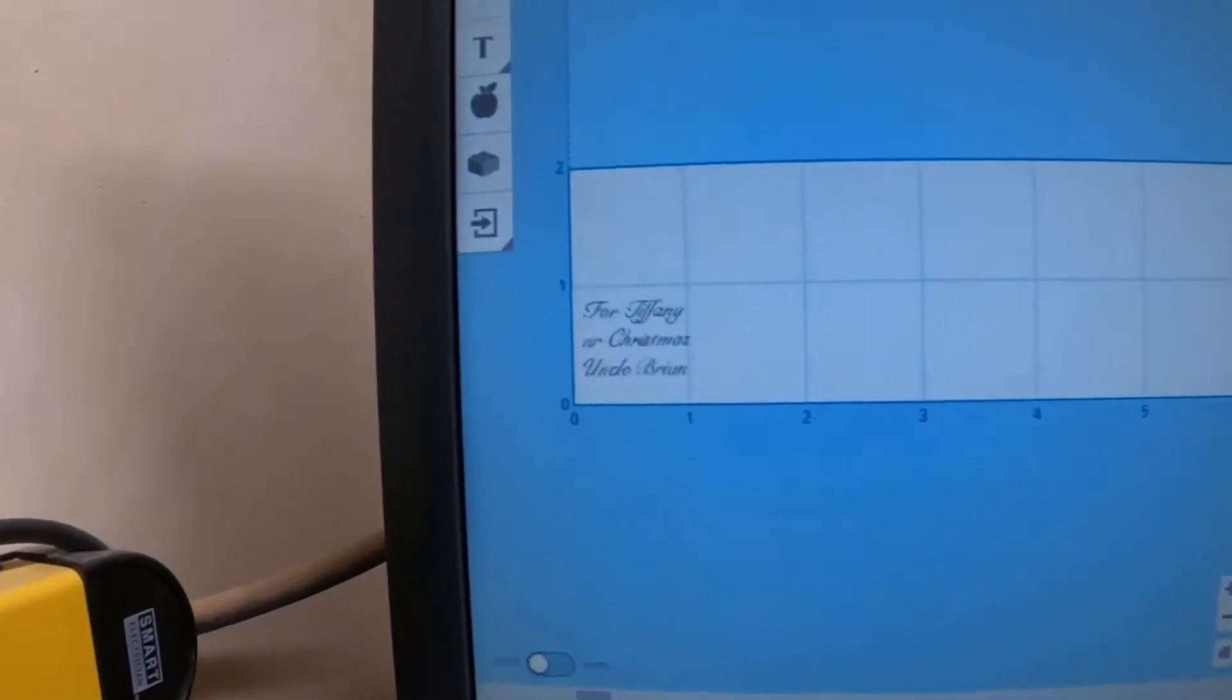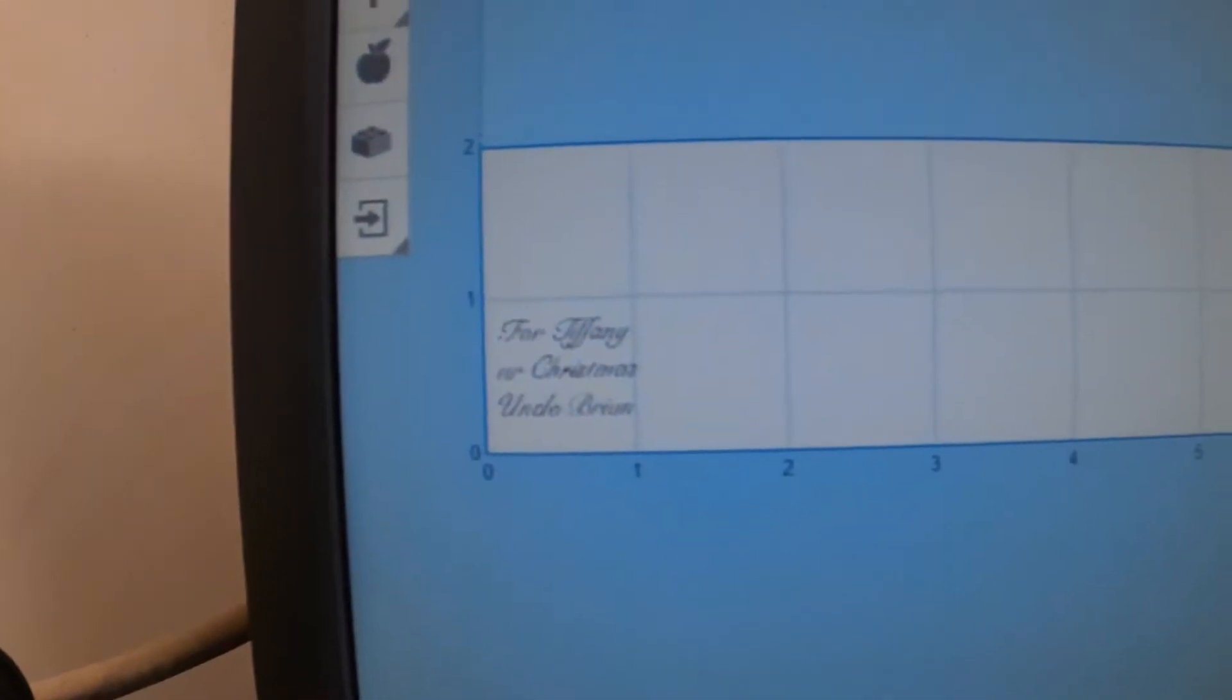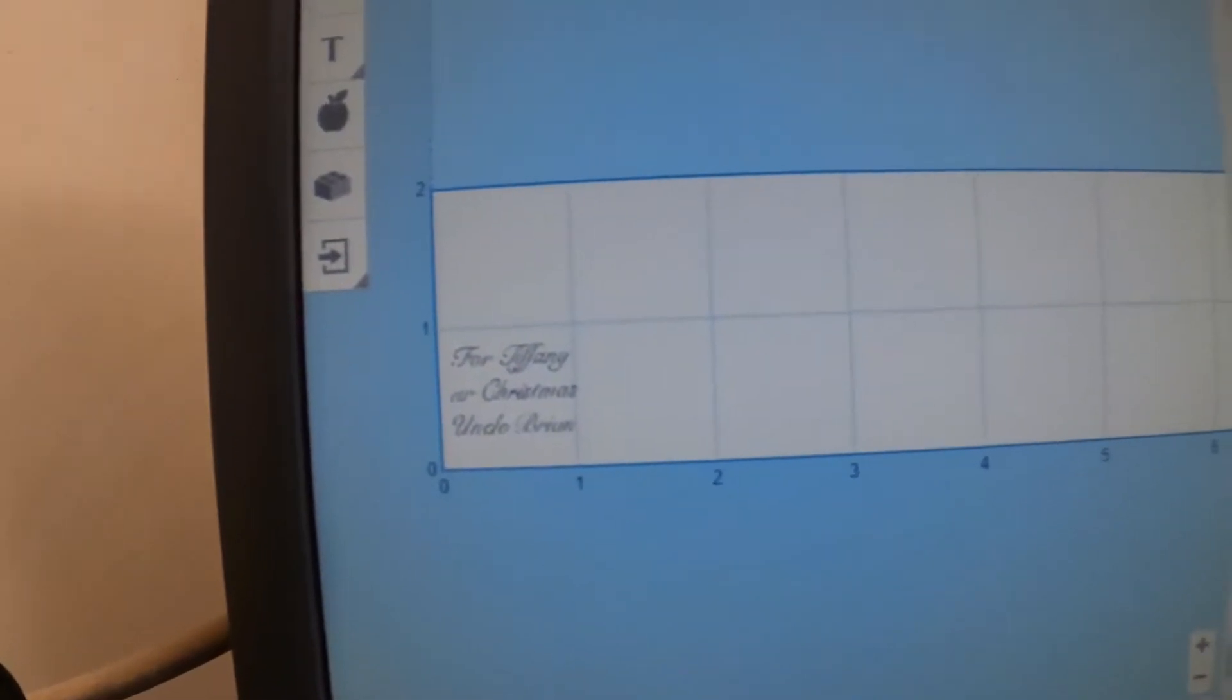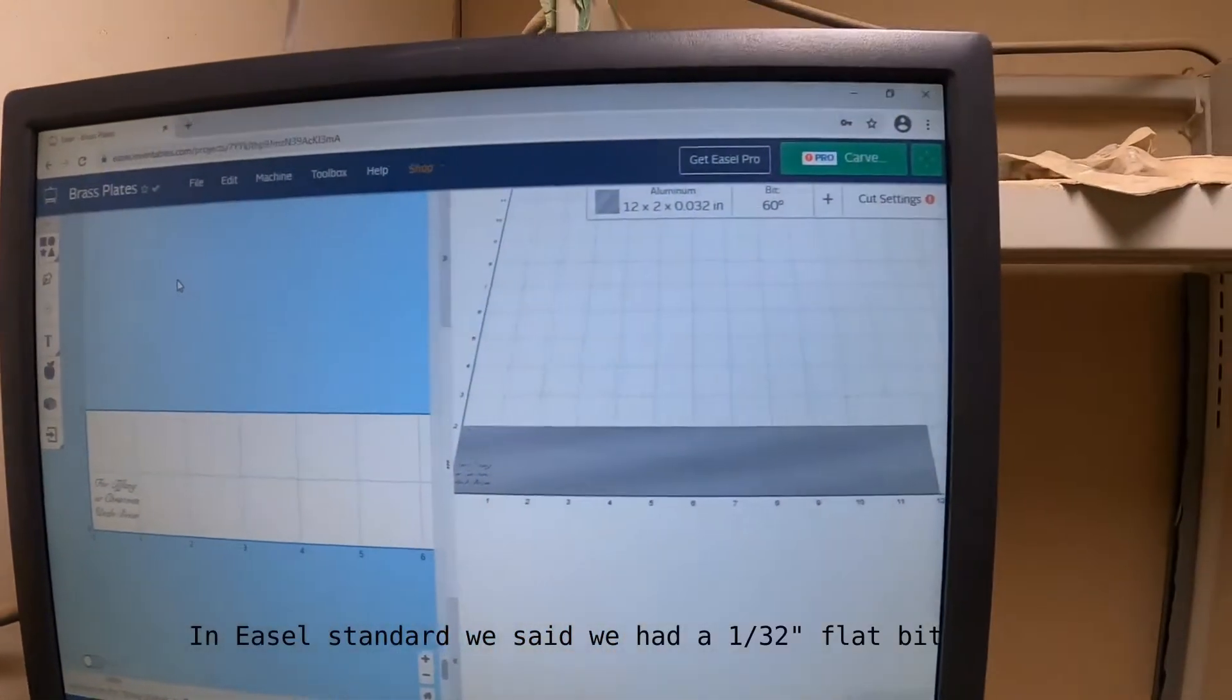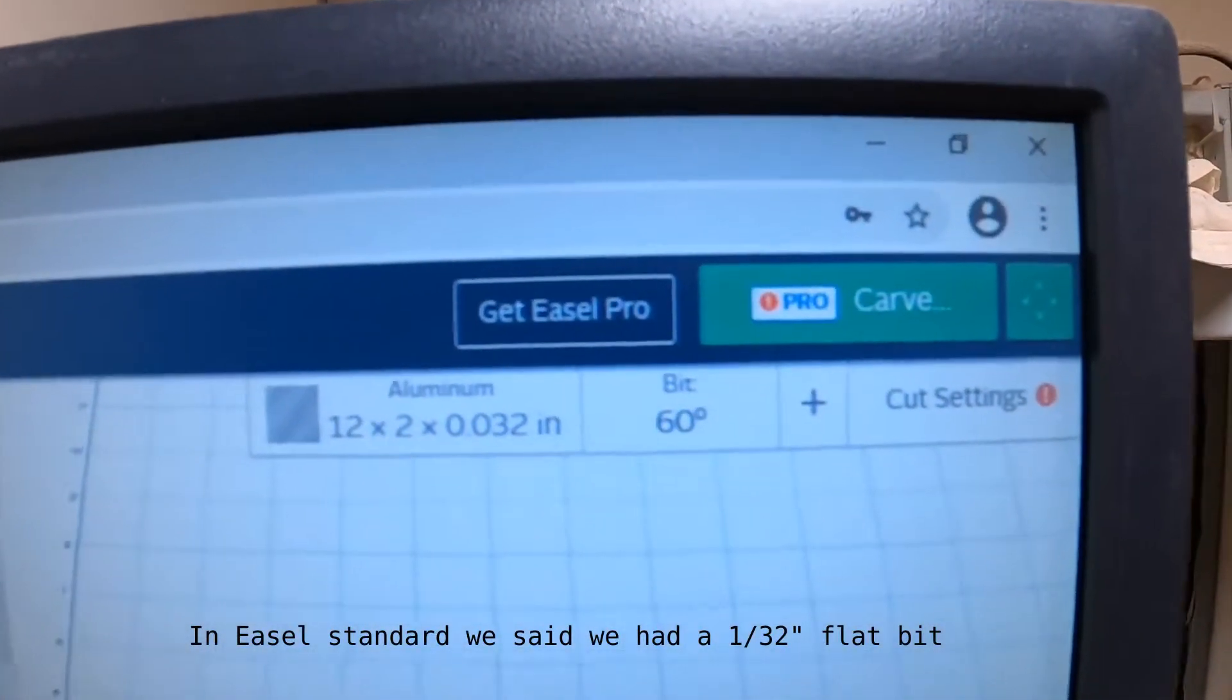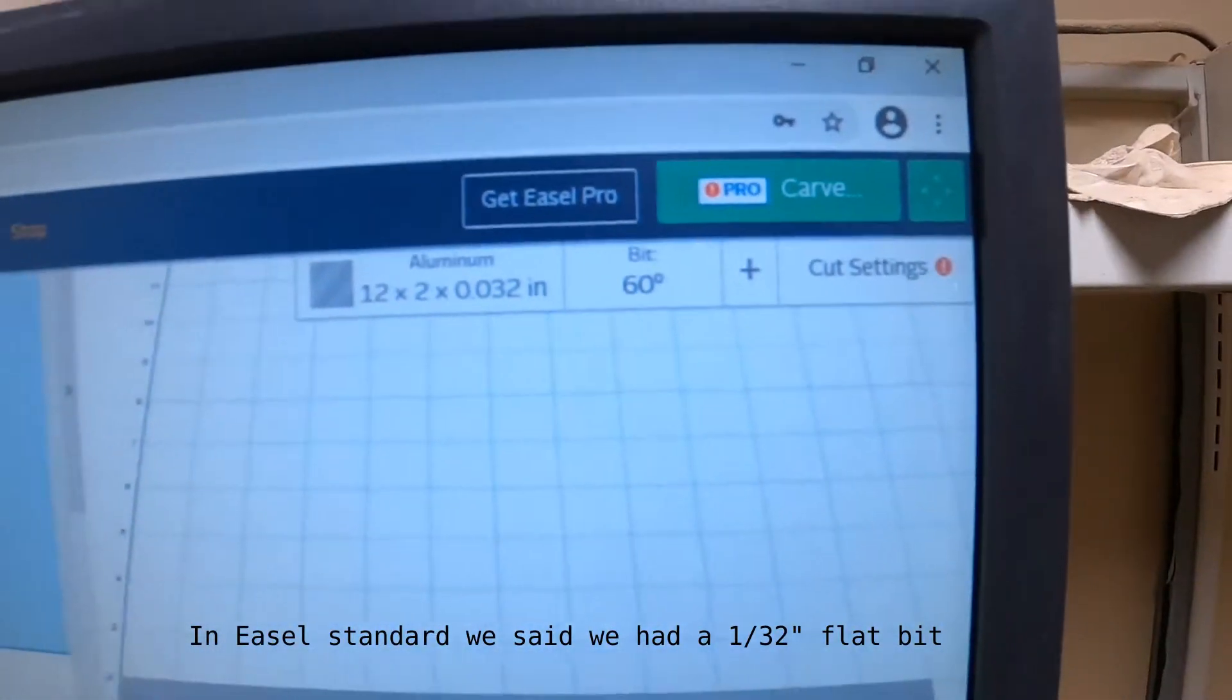So we're going to use Easel to do this. We're going to try and just do a test here. We've got 'For Tiffany Christmas' and some other stuff there, and then we've got to still set up the bit. We've got a 60-degree bit set here, but I don't think we've set the depth.